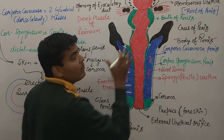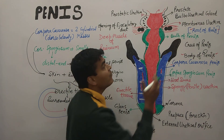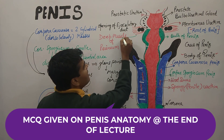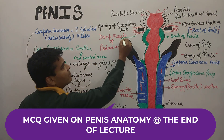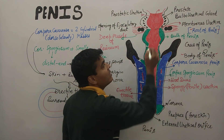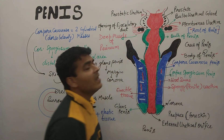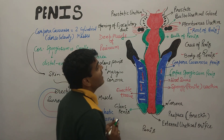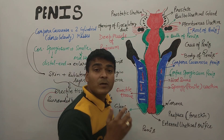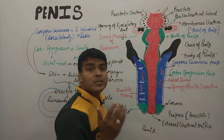The bulb of the penis, on its posterior side, is surrounded by the deep muscle of the perineum. On the deep muscle of the perineum, we find the bulbourethral gland. In the bulb of the penis, there are muscles known as the bulbospongiosus muscle.